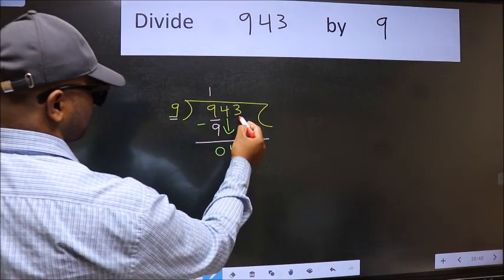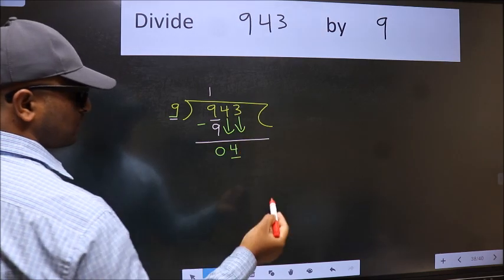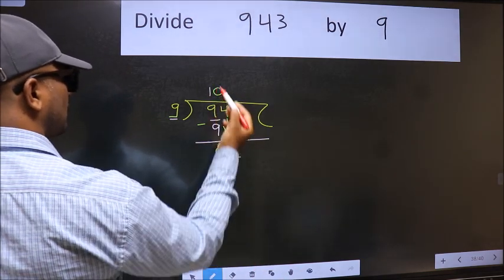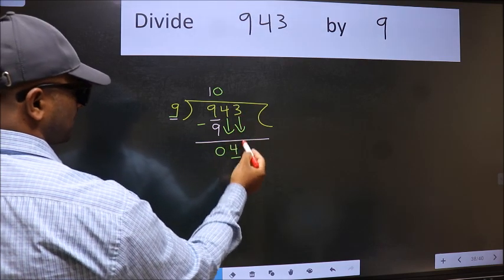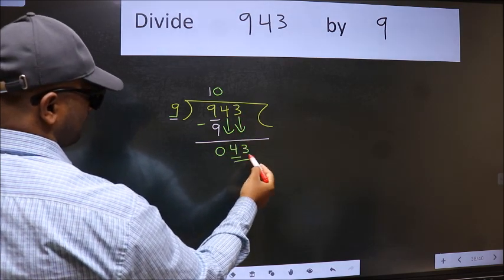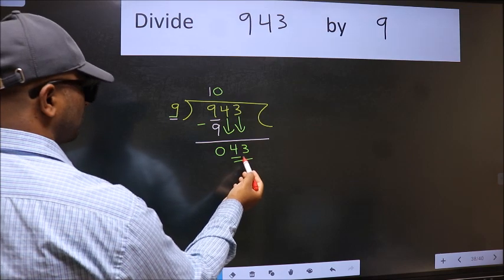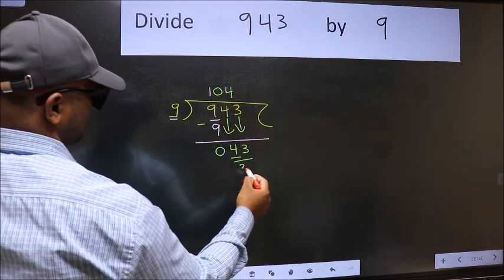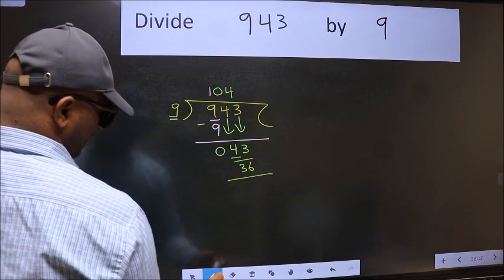The rule to bring down the second number is we should put zero here, then only we can bring this number down. Now 43. The number close to 43 in the 9 times table is 9 times 4, which is 36. Now we subtract and get 7.